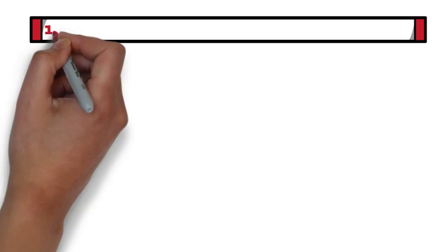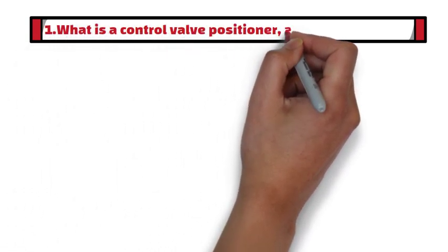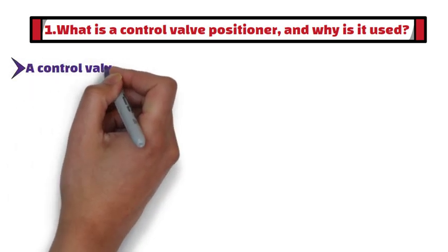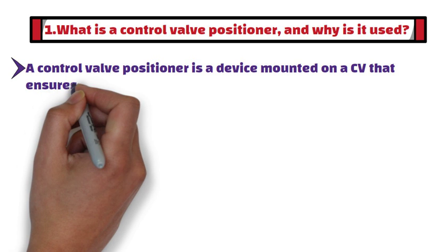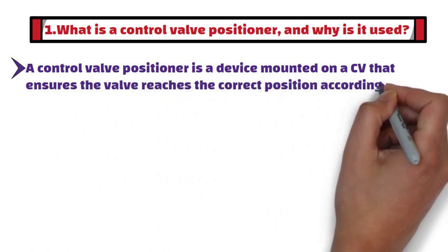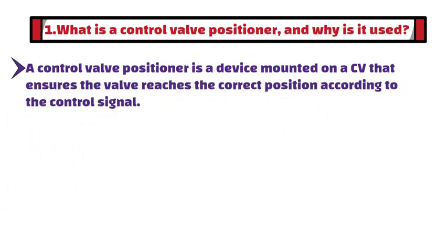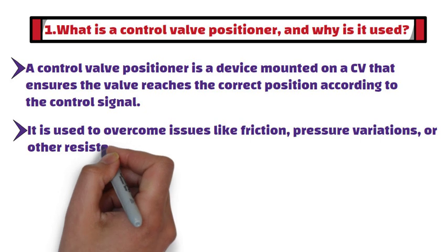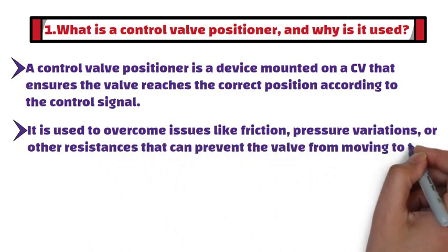First question: What is a control valve positioner and why is it used? A control valve positioner is a device mounted on a control valve that ensures the valve reaches the correct position according to the control signal. It is used to overcome issues like friction, pressure variations, or other resistances that can prevent the valve from moving to the desired position accurately.